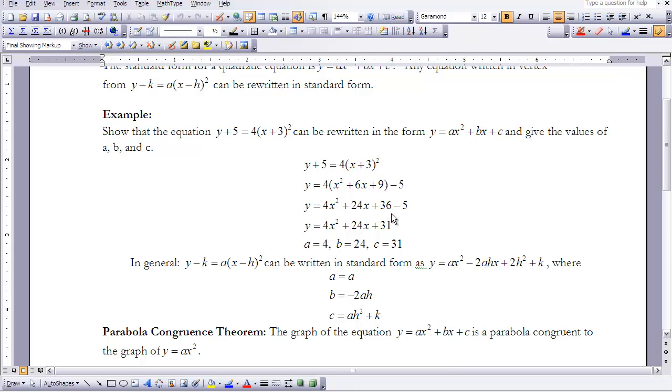We need to combine our like terms, so 36 minus 5 gives me 31. We are now in standard form, and you can see that our value for a is 4, our value for b is 24, and our value for c is 31.